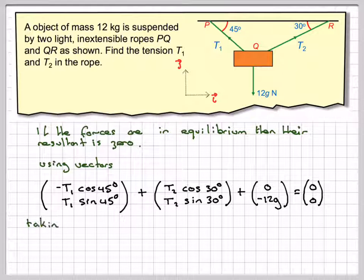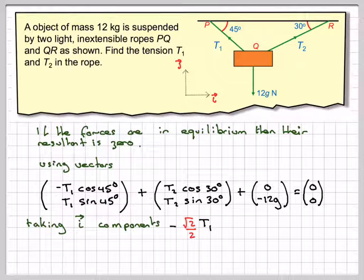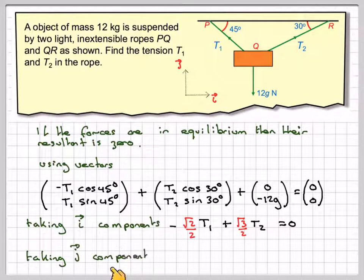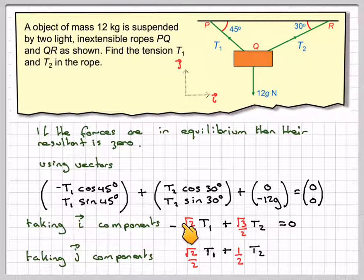So taking the i components, we have minus root 2 over 2 T1, which is cos 45, plus root 3 over 2 T2, which is cos 30, equals 0. And taking the j components, root 2 over 2 T1 plus a half of T2 minus 12G equals 0. If we take the minus 12G to the other side it will be 12G, so we can set up two simultaneous equations.